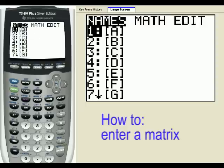Here you'll see we've got three sub-menus. The names in which we can pick the name of each matrix: A, B, C, D, E, F, G, and then there's a few more.